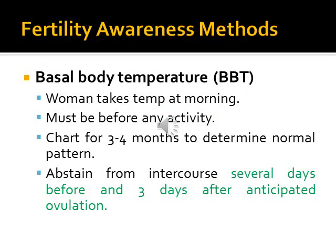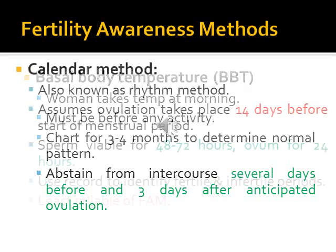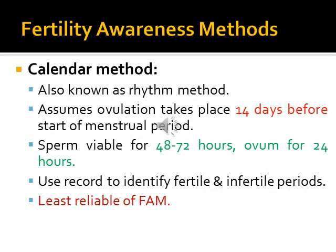To identify the fertile period: first, through basal body temperature — the woman takes her temperature each morning before any activity, and abstains from intercourse several days before and three days after anticipated ovulation. Second, through the calendar method — we assume ovulation occurs about 14 days before the start of the next period. Sperm may be viable for about three days and the ovum for one day. This is the least reliable method and requires a regular cycle.